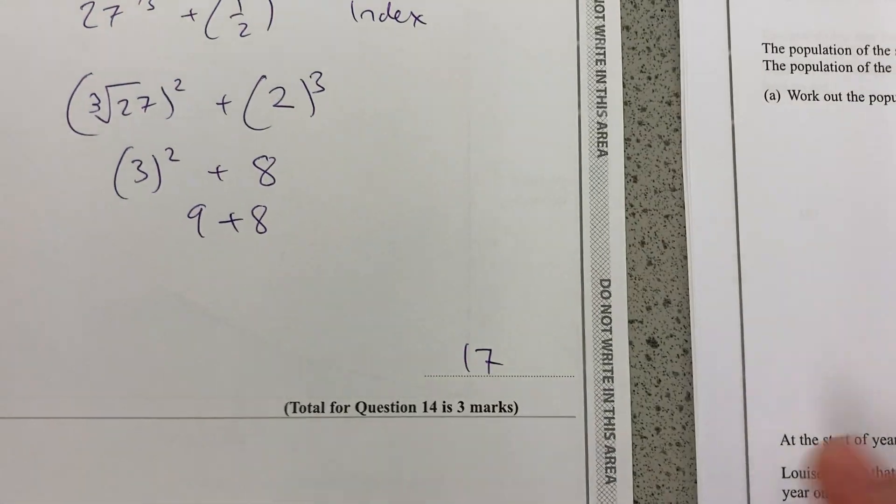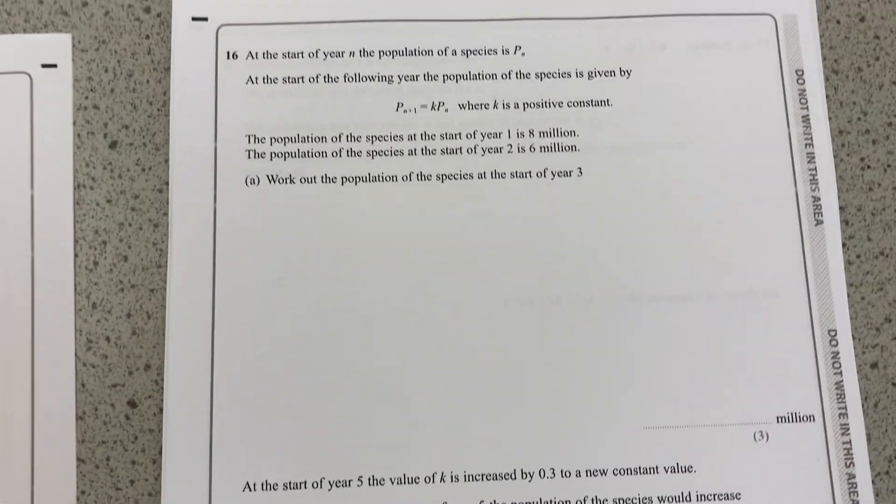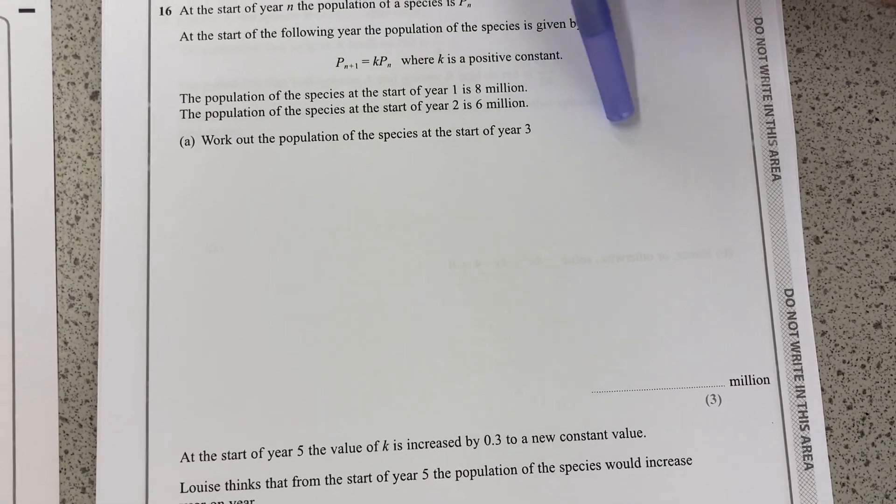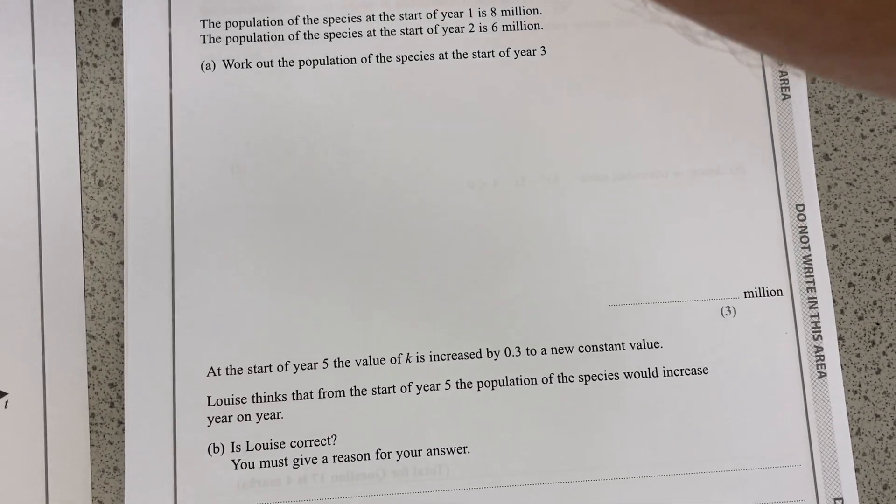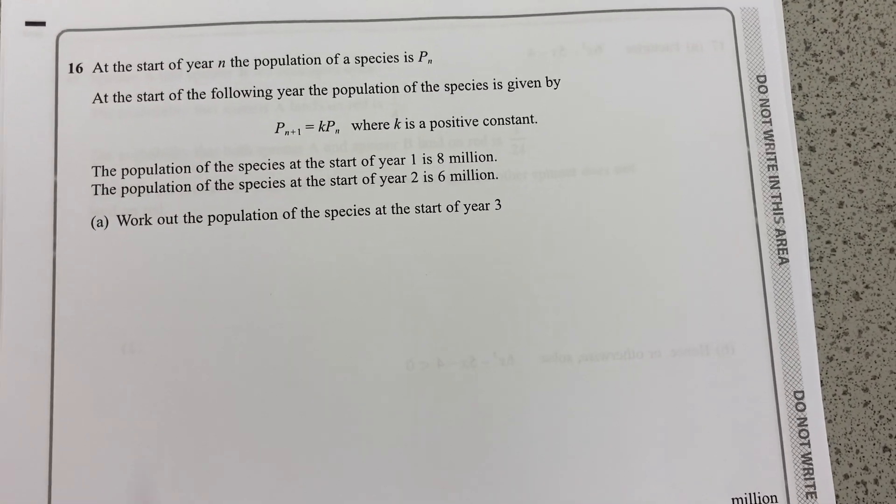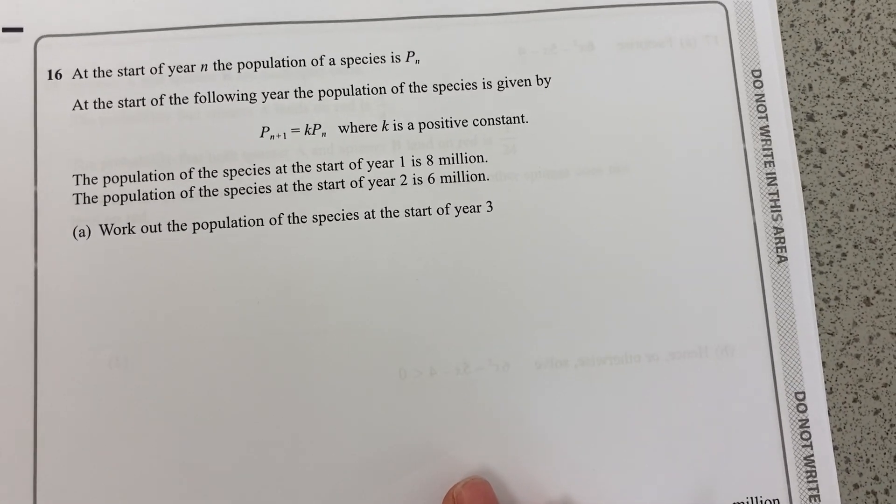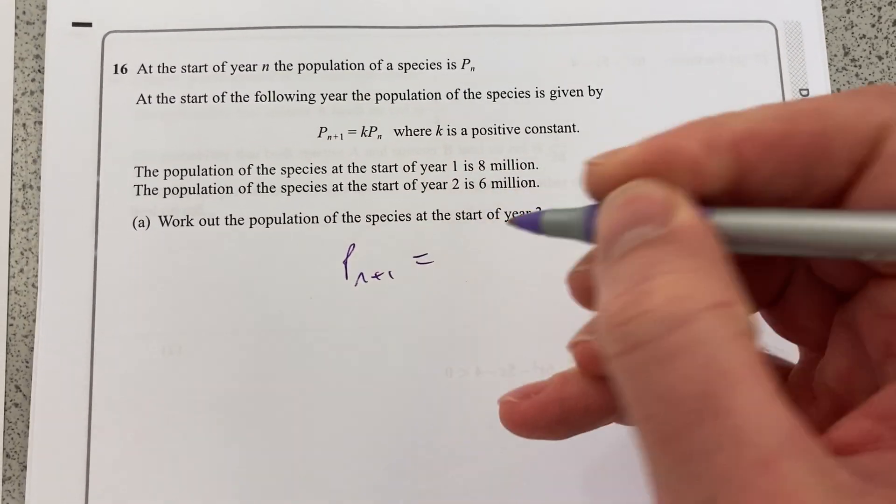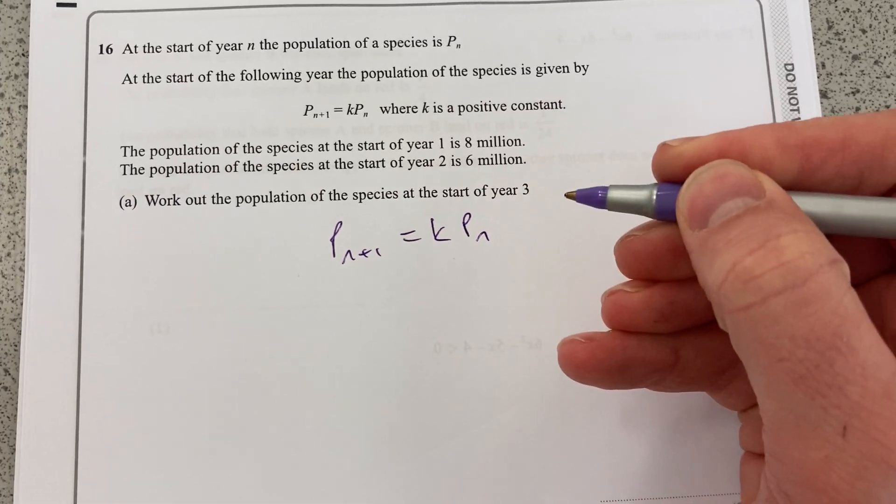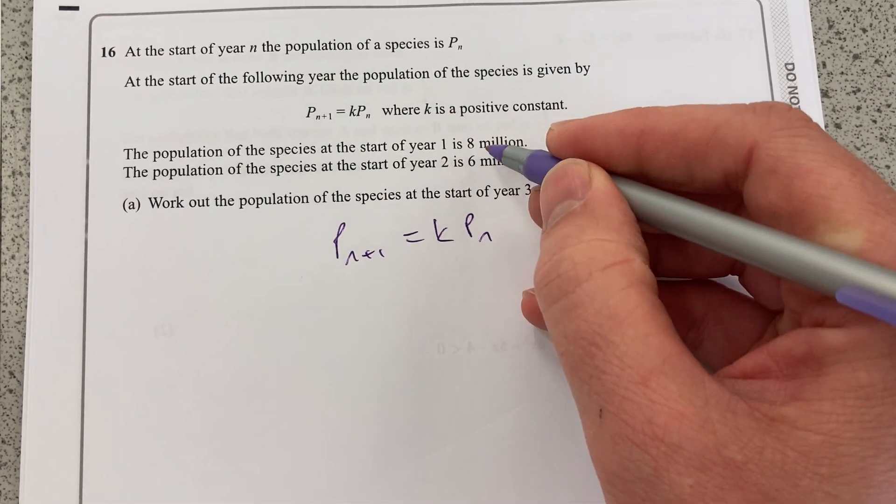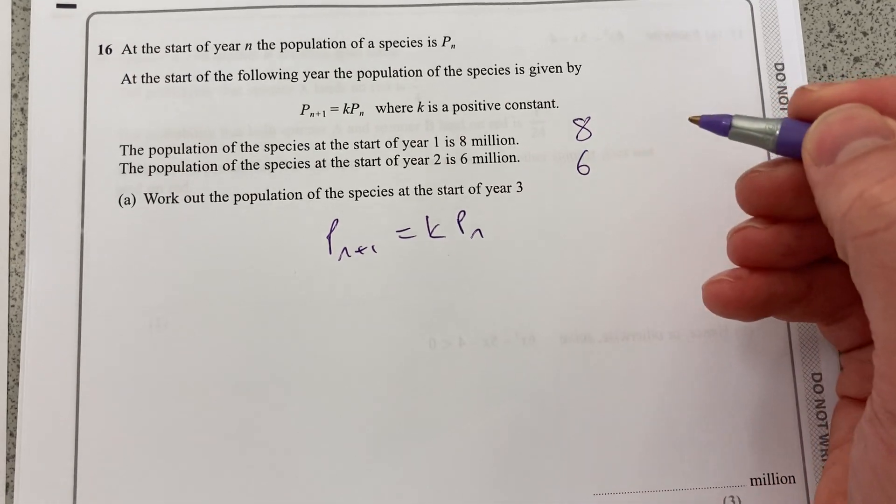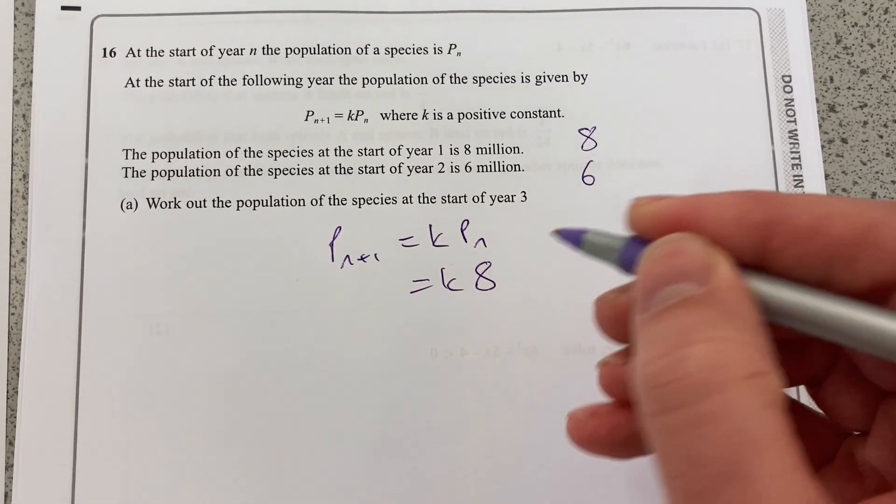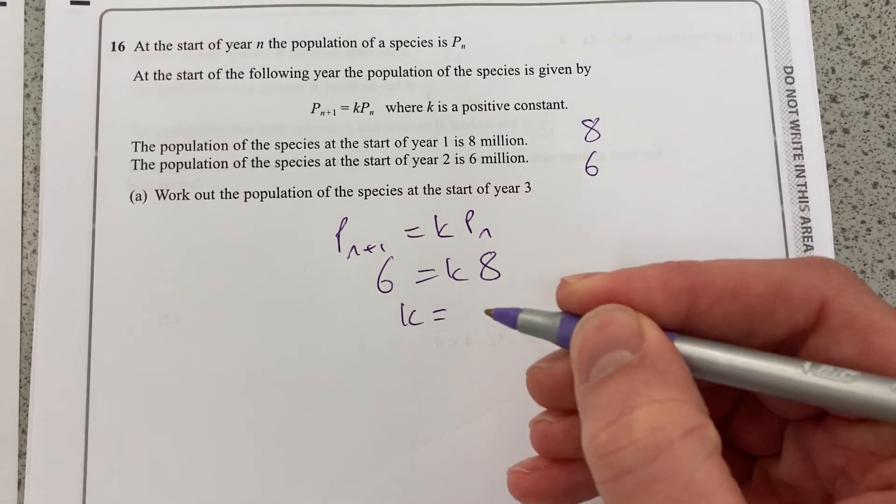Let's move on to question 16 then. In the start of a year, the population of species is P_n. At the start of the following year, the population of species is given by P_(n+1) equal to k times P_n. Population of the start of year 1 is 8. In year 2, it's 6. So if I put 8 there, and in year 2, it's 6, we can then solve for k.